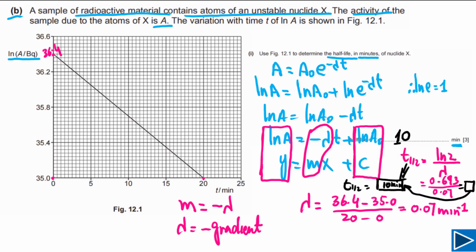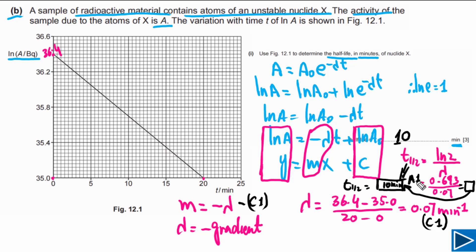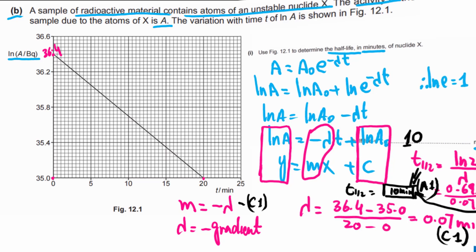This question has three marks. The first mark is awarded for correctly stating the relationship (ln(A) = ln(A₀) − λt). The second mark is for obtaining the correct value of λ. The third mark is the answer mark for the correct half-life.